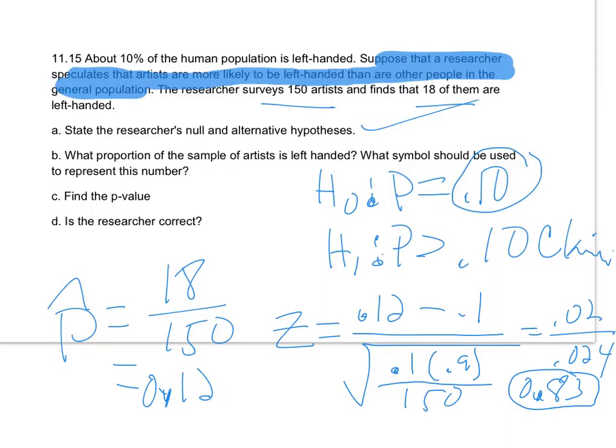Then I'm back here to answer this last question. Was the researcher correct? Well, with a p-value that large, we can't reject H0. If we think about that critical value of z, we couldn't reject H0. So no, the researcher wasn't correct. The data doesn't support the claim that more than 10% of artists are left-handed. I encourage you to go take a look at that flow chart I have up in the discussion forum.